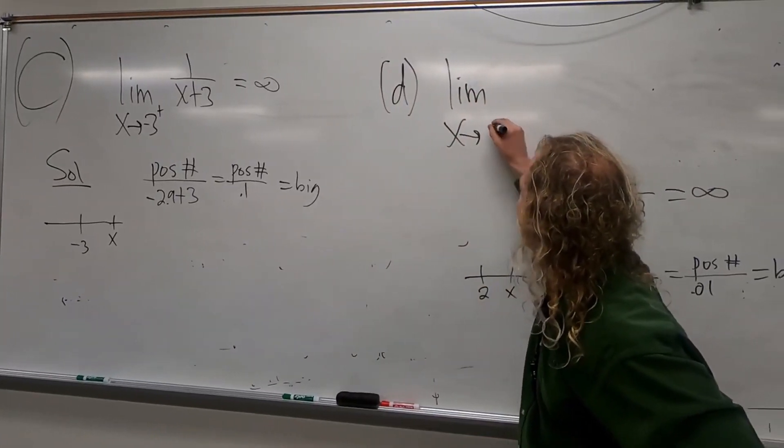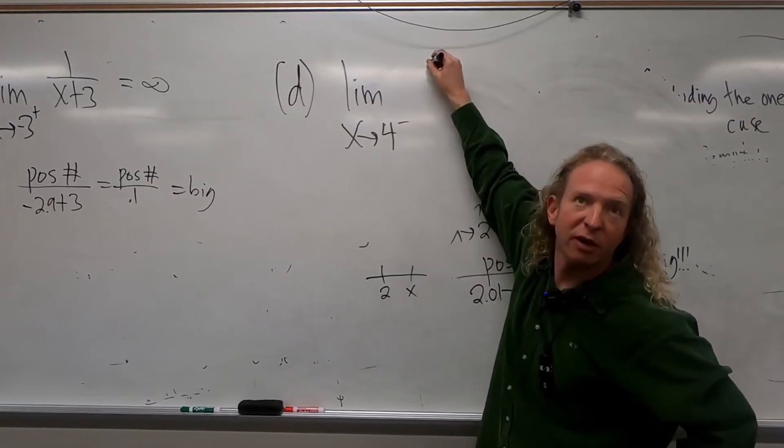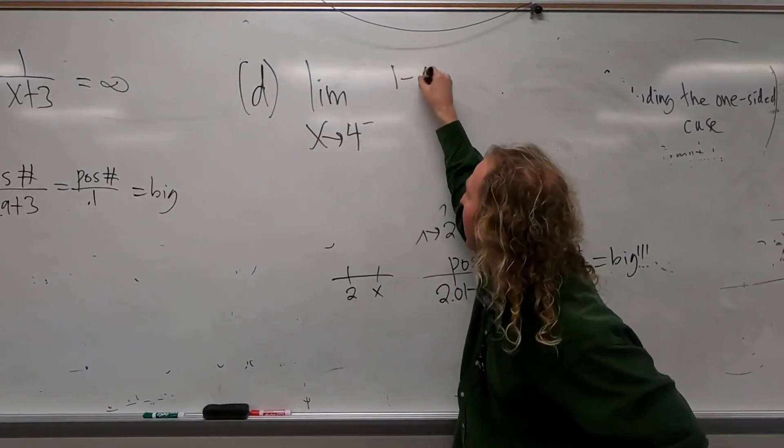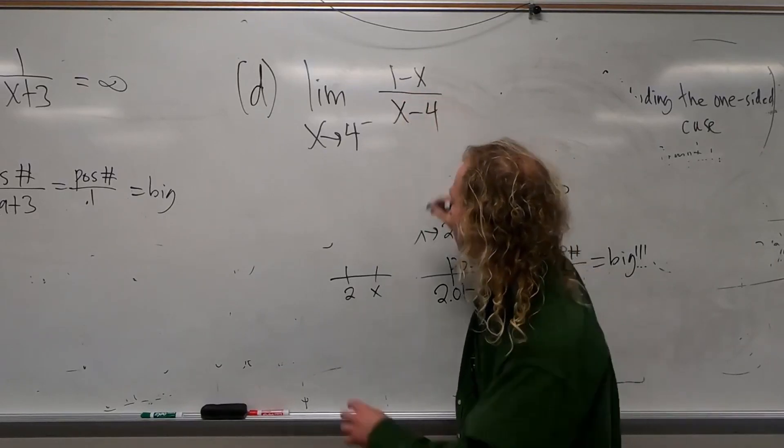Let's try this one. I'll help you with this one. Let's do 1 minus x over x minus 4. I'll work this one out for you.